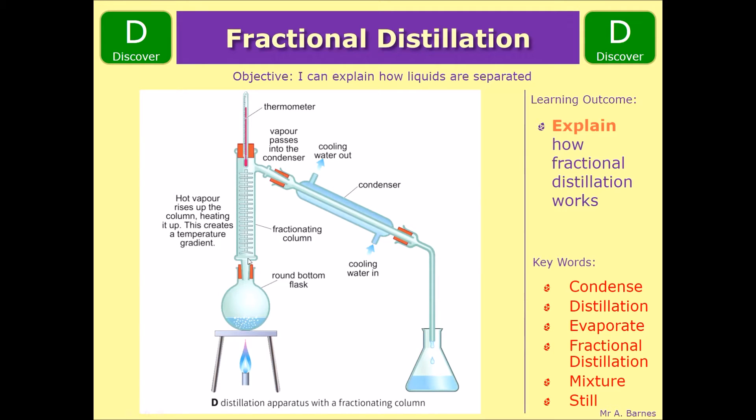But as the column heats up and when it gets to 50 degrees that first liquid would be able to get all the way up to the top and pass into the condenser. The water cooling around the outside would then turn it back down to a liquid where it could be collected.